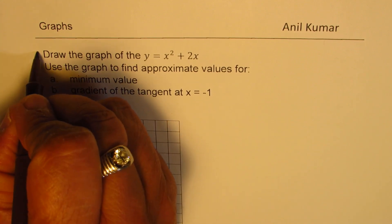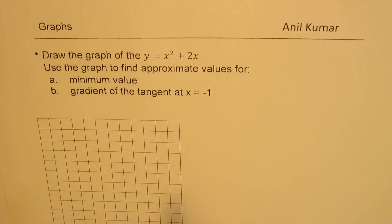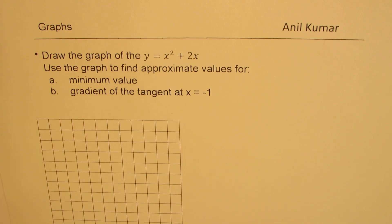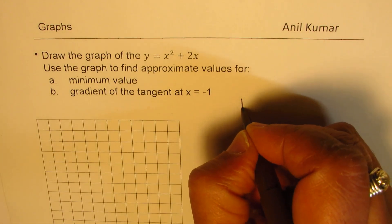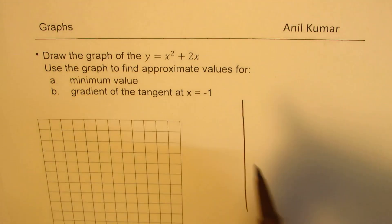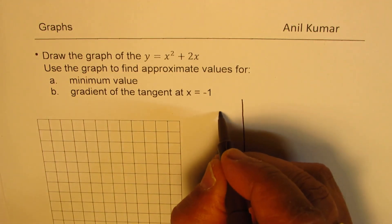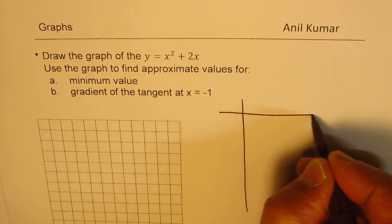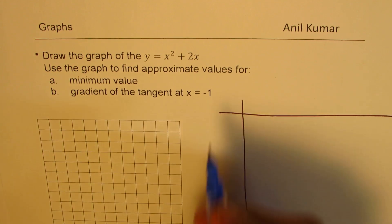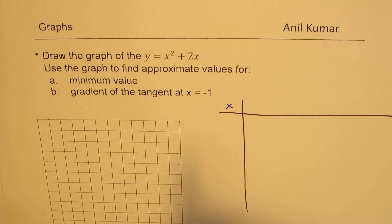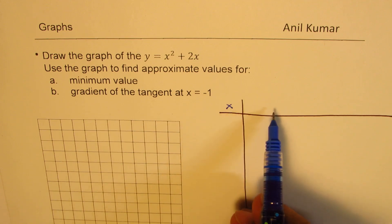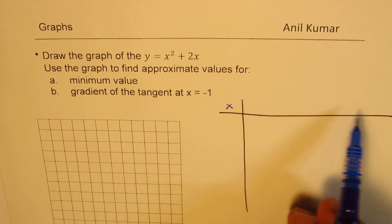Let's first see how to draw the graph when the equation is a quadratic equation. We have to take some x values and then calculate the y values for the same. Let's take x values as minus 2, minus 1, 0, 1, and 2.